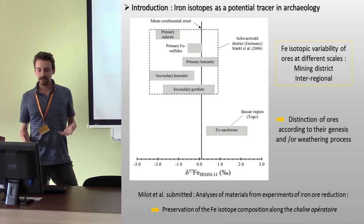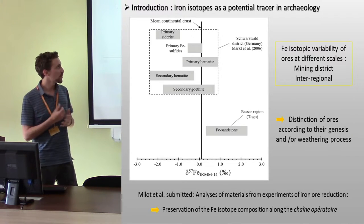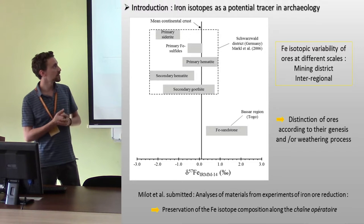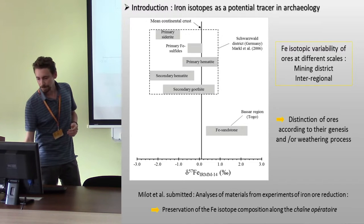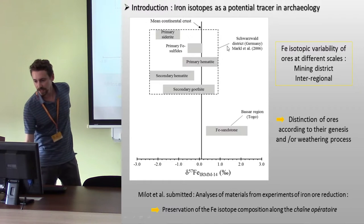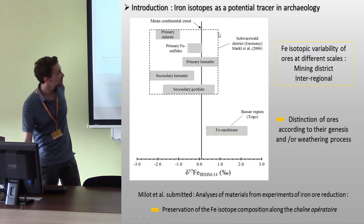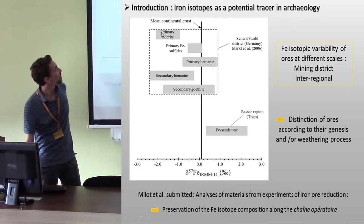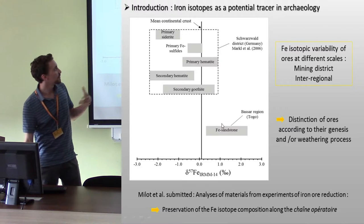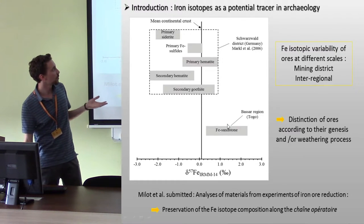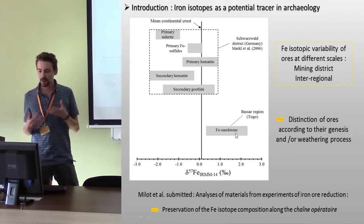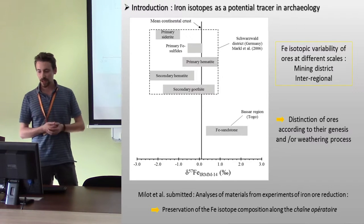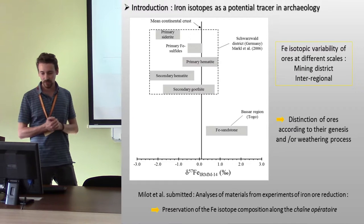Previous studies have shown the important variability of the iron isotopic composition in different ores. Here at the Seenew district, we can see the variability of different types of ore. And here we can see the difference of iron isotopic composition between two regions. This variability may allow distinguishing ores according to their genesis and weathering processes.